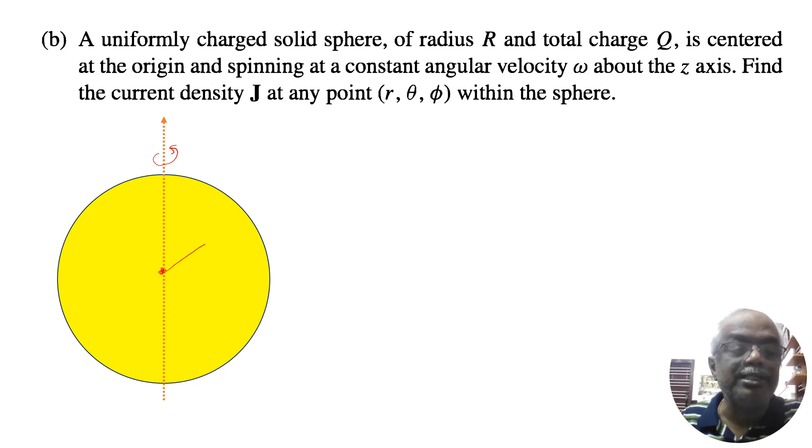At a distance r we are going to find, that is, find the current density at the point r, θ, and φ. So this is r, some distance r. And θ also will change. By definition, this J is equal to ρ into v. J is equal to ρv.